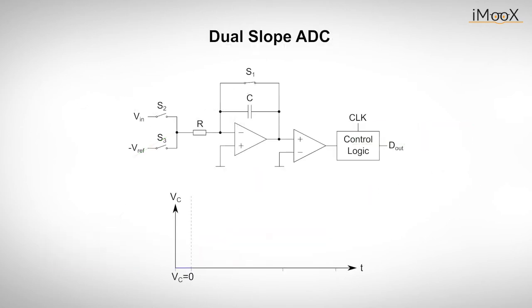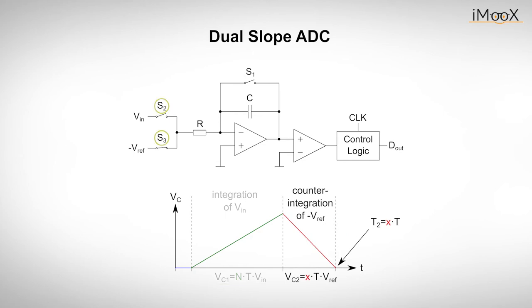Let's look at this simplified schematic of a dual slope converter. The procedure consists of three steps. At the beginning, the switch S1 is closed and the integration capacitor is discharged. In the next phase, S1 opens and S2 is closed. The capacitor C is charged with a fixed number N of clock pulses of duration T. In the last phase, S2 is opened and S3 is closed. The capacitor C is then discharged again by a negative reference voltage.